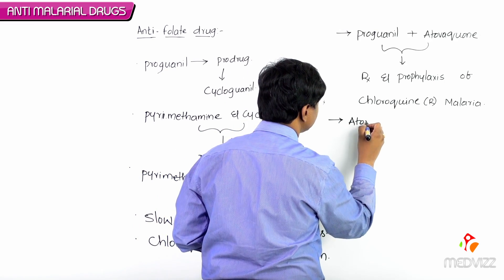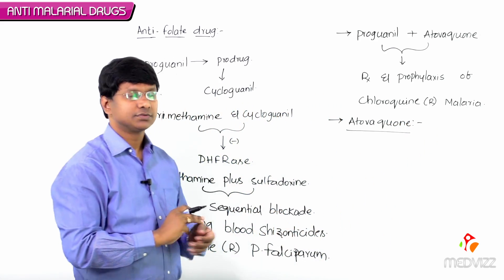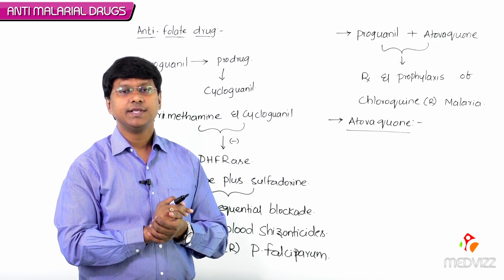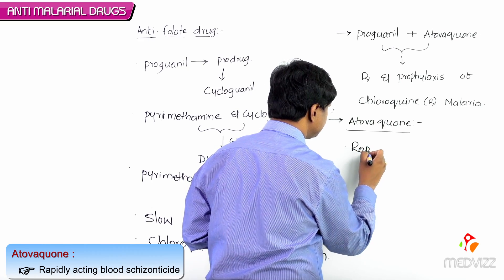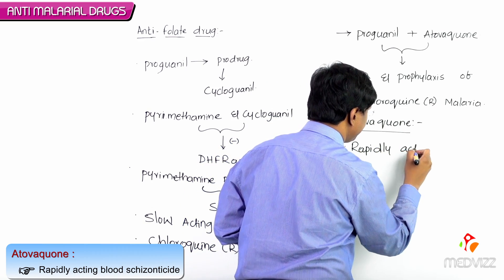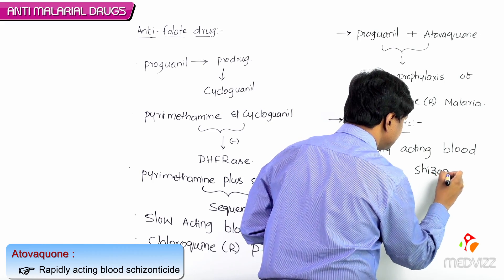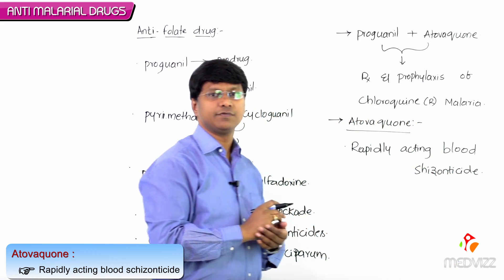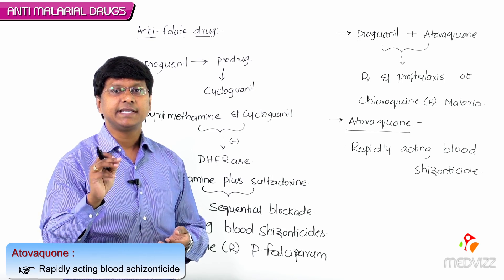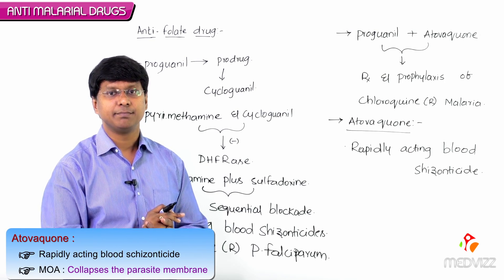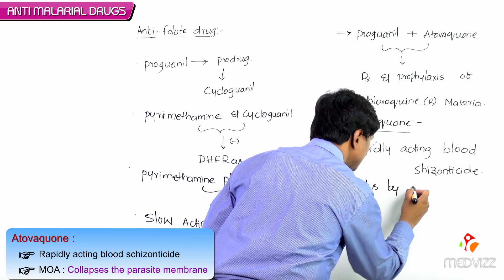Now let me talk about atovaquone. Atovaquone is one of the rapidly acting blood schizonticides. It acts by collapsing the parasite membrane.